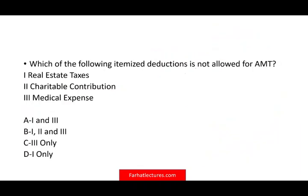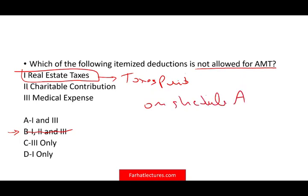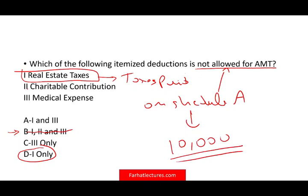Next question: which of the following itemized deductions are not allowed for AMT? The options are real estate taxes, charitable contribution, and medical expenses. Are all three not allowed? That's not true — some are not allowed but not all, so option B listing all three is out. Here's the key: any taxes paid on Schedule A are not allowed for AMT. Charitable contributions and medical expenses are allowed. So the answer is option one only — real estate taxes. Remember, the maximum an individual can take for taxes on Schedule A is $10,000, so you would add back that $10,000 when computing AMTI.